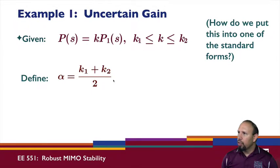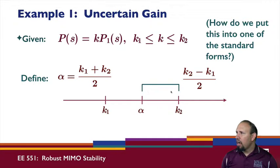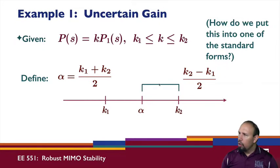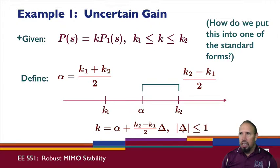To quantify the uncertainty, we compute alpha as the average of k1 and k2 — that sits right in the middle of the timeline between k1 and k2. Next, we look at the difference: (k2 - k1)/2. We can then write k as alpha plus (k2 - k1)/2 times delta, where delta has magnitude less than or equal to one (between -1 and 1). If delta equals -1, we recover k1; if delta equals +1, we recover k2.